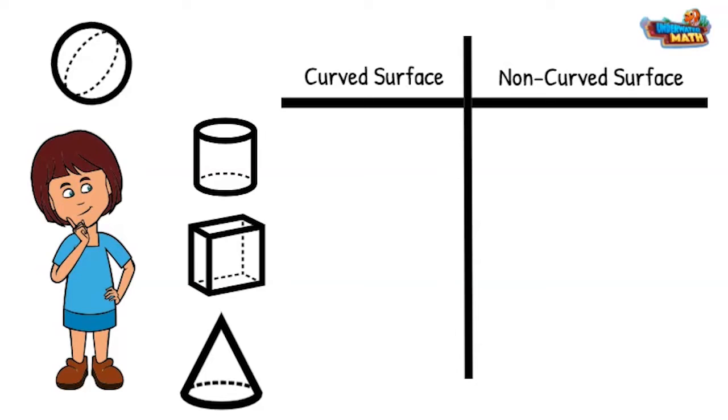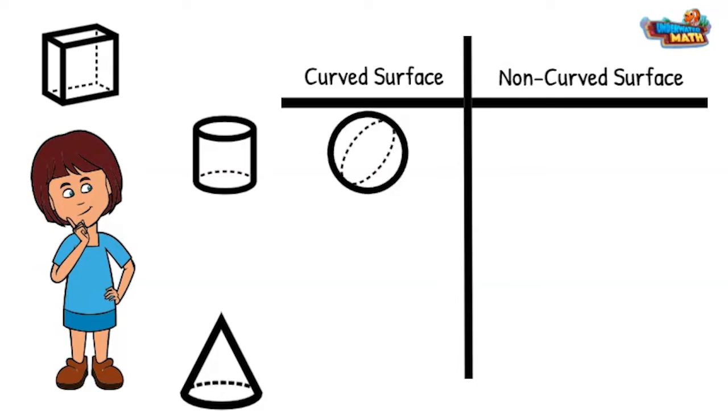This is a rectangular prism. It has six faces. It looks like a tissue box. They don't roll smoothly, so they will go in the non-curved surface.